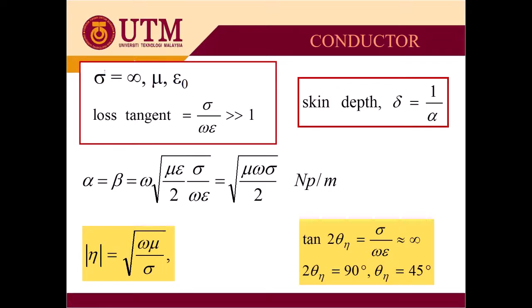Conductor basically have very high conductivity. The conductivity related to the flow of electrons or currents. So here we can set sigma to be infinity and we have the value of mu, certain mu, and epsilon equal to epsilon naught. The loss tangent sigma divided by omega epsilon will be much much greater than 1.